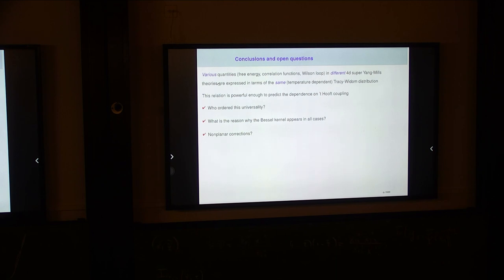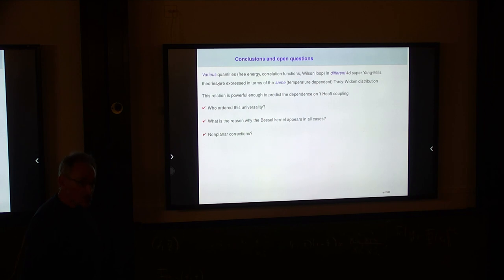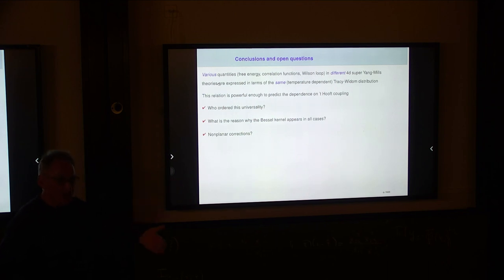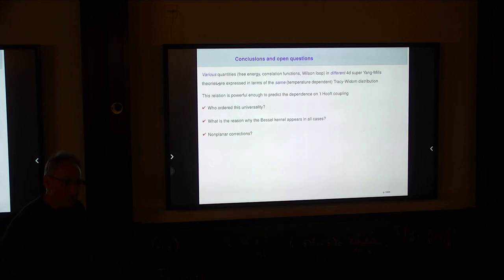Q: Do you expect the same structure for the BFKL pomeron dimension as well? A: Yes. The integral equation that the BFKL pomeron dimension satisfies is also of this type. One could add that to the list of different observables. For the BFKL pomeron, there is some understanding of why the Bessel kernel appears — it has to do with the Fourier transform — but why the same Bessel kernel appears for the Wilson loop and the free energy is not yet understood.